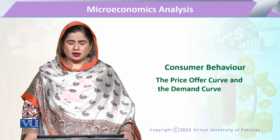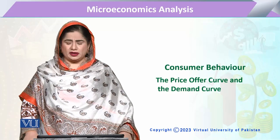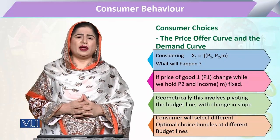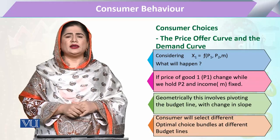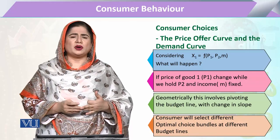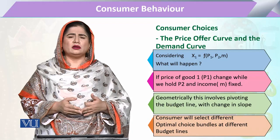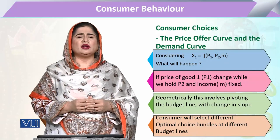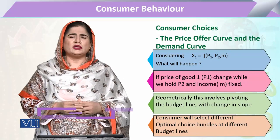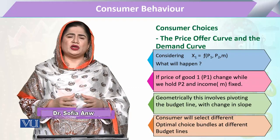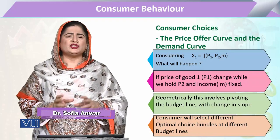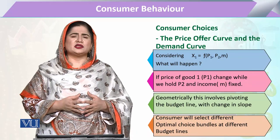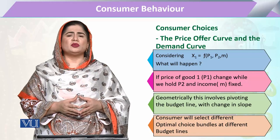The price offer curve and the demand curve. The consumer's demand curve depends upon the commodity's own price, other goods' price, and the consumer's income. Whenever there is a change in the commodity's price, the consumer demand will change. This relationship between the change in price and the change in consumer demand is exhibited in the form of the consumer demand curve.